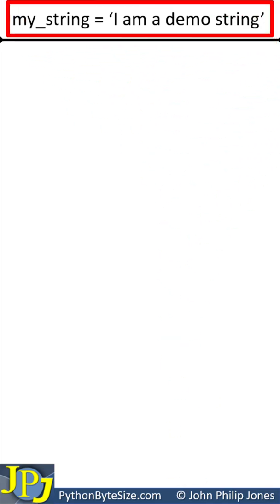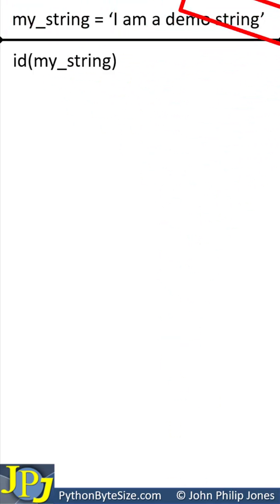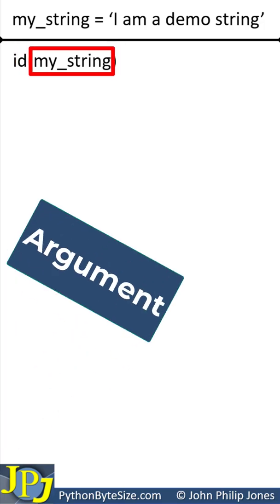We can see this is a program statement that assigns a string. This is the ID function that takes my_string as the argument.